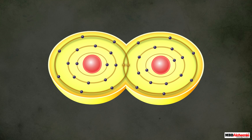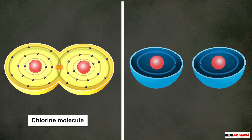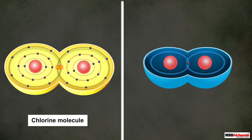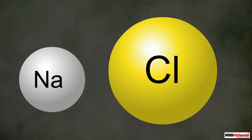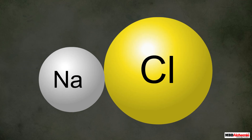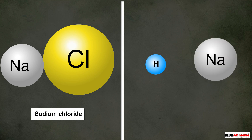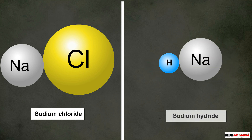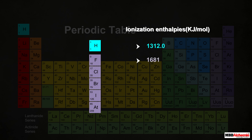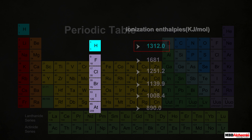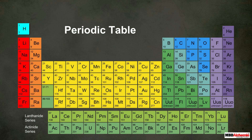Not only this, hydrogen has some other similarities with halogens too. For example, halogens generally exist as diatomic molecules due to the formation of a covalent bond between two halogen atoms. Similarly, hydrogen exists as H₂, in which two hydrogen atoms are combined through a covalent bond. Another similarity is that halogens combine with alkali metals to form metal halides; also, hydrogen combines with alkali metals to form metal hydrides. Furthermore, hydrogen has a high ionization enthalpy quite comparable to that of the halogens.